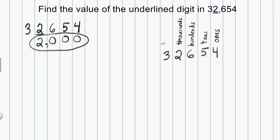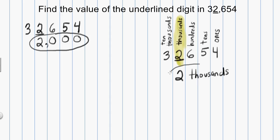And my three is in the ten-thousands place. Remember, my two is the underlined digit, so all I have to do is look right where the two is and look at the column it's in. I can see that my two is in the thousands column — the thousands place. So I'll simply write down 'two thousands' and circle my answer.